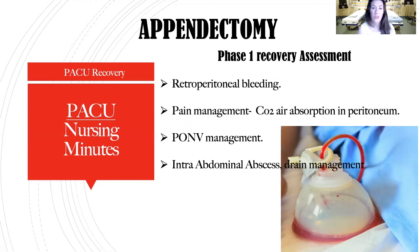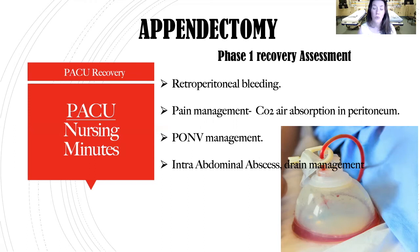Phrenic nerve pain can radiate to the shoulders, jaw, and scapula from the branches off the phrenic nerve. Know that this is normal. With ambulation it will increase temporarily, but it helps the air get absorbed and go away faster, so we do want patients mobilized. This is a normal level of pain we just need to manage post-op.